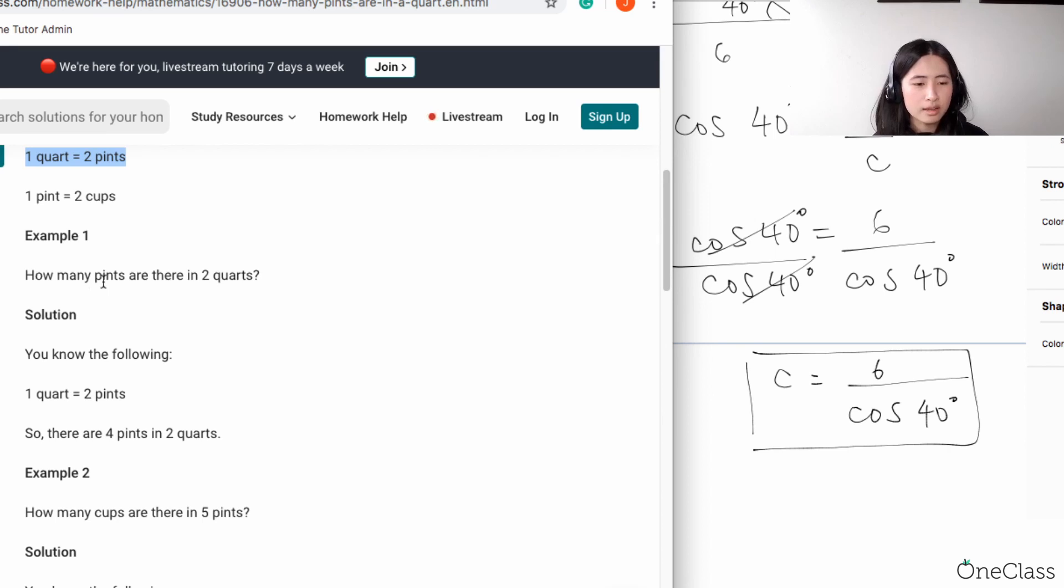If they're asking you how many pints are there in two quarts, then you know that if you have one quart, that's two pints. Then all you have to do is multiply by two to get that ratio. So one times two, this becomes four pints. That's why it's four.